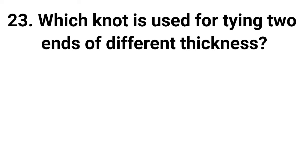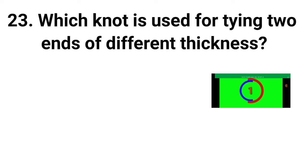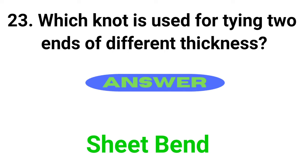Question 23: Which knot is used for tying two ends of different thickness? Answer is Sheet bend.